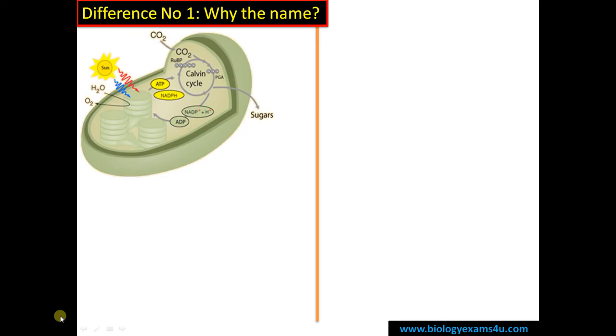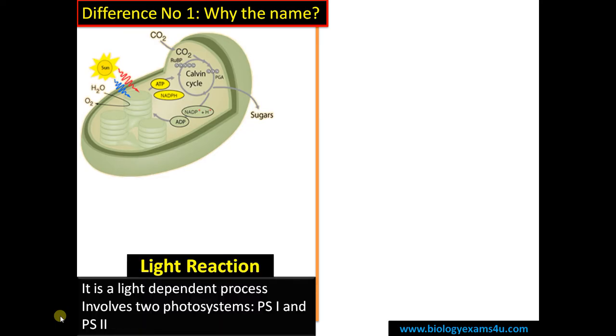Starting with why the name? As we all know, light reaction is a light dependent process. It involves two photosystems: photosystem 1 and photosystem 2.